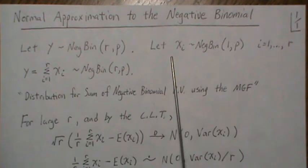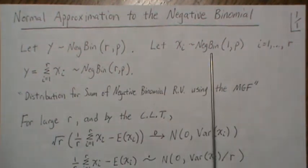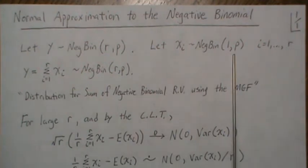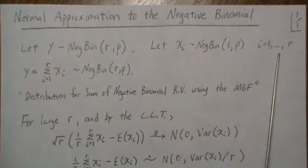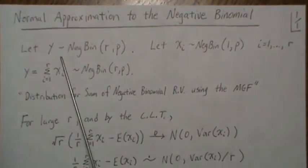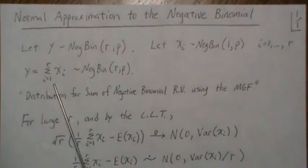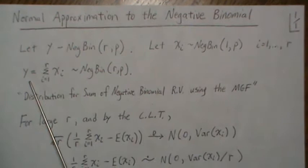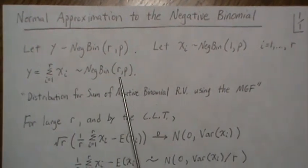Now if we let Xi be a negative binomial with 1,p, a geometric distribution, for i equals 1 to r, then Y can be represented as this sum, the sum of these Xi's, where Y is again negative binomial rp.